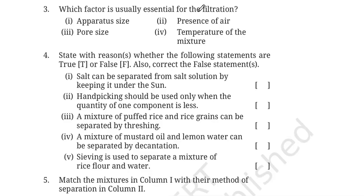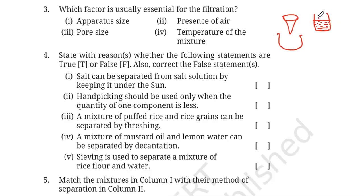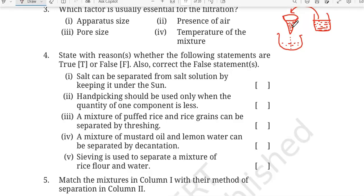Question number three: Which factor is usually essential for filtration? In filtration, we use a filter paper made in the form of a cone, then we take a beaker with the mixture — suppose sand and water, a solid-liquid mixture where the solid is insoluble in water. We pour the mixture over the filter paper; the sand remains on the filter paper and the water comes down.